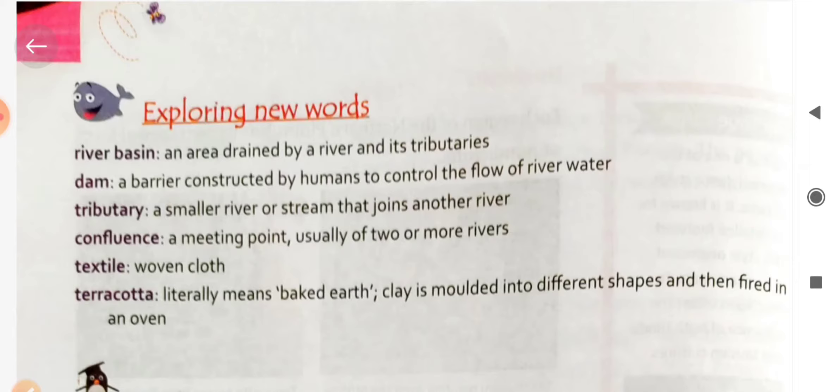Textile means woven clothes — when clothes are woven in large quantities, that is called the textile industry. Terracotta literally means 'baked earth' — clay is moulded into different shapes and then fired in an oven to create models or figures.